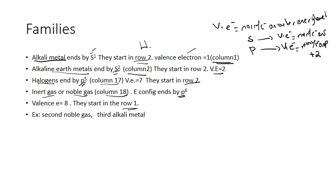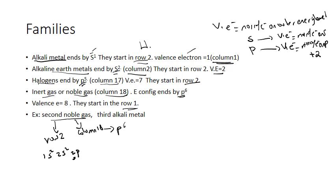For example, to find the electron configuration of the second noble gas: noble gases start in row 1, so the second noble gas is in row 2. We write: 1s2, 2s2, 2p6. Since we are in row 2 and column 18, we stop at p6. The atomic number equals the total electrons: 2 plus 2 plus 6 equals 10.